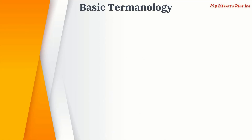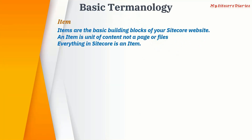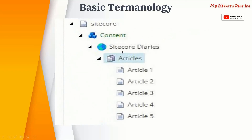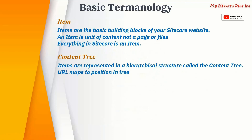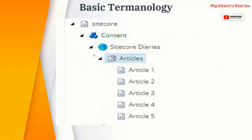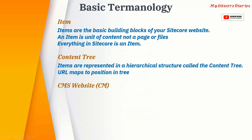Let's look at some basic Sitecore terminology. An Item is the basic building block of a Sitecore website. An item is not just a page or a file — it is a unit of content. Everything you create in Sitecore is an item. For example, in a site called Code Diaries, the content nodes for Article 1, Article 2, 3, 4, 5 are all items. Items are represented in a tree structure with parent-child relations — for example, 'Articles' is the parent and individual articles are children.